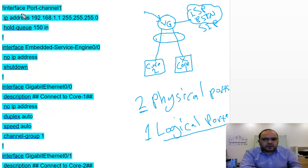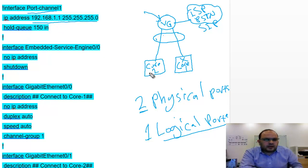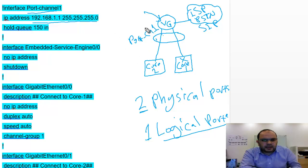This logical port I will call port channel. So I will create interface port channel number one and give it the IP address 192.168.1.1. I've created this port channel and assigned it that IP address.